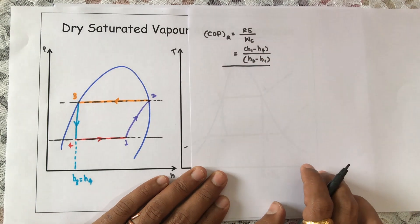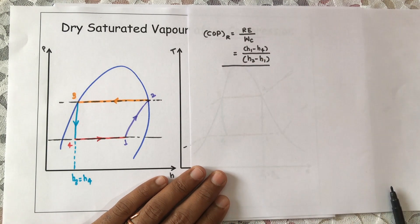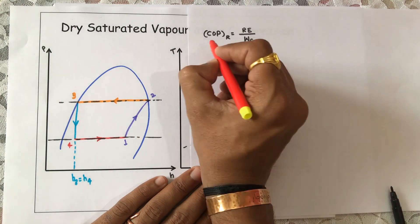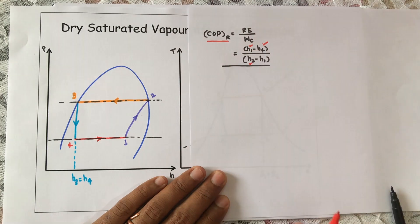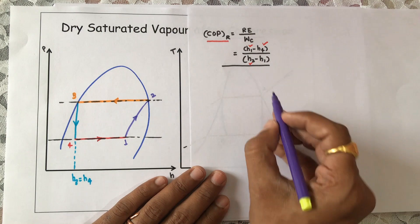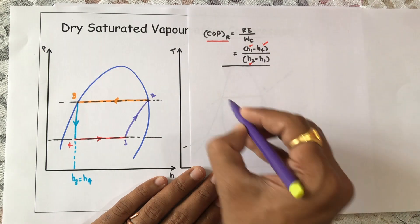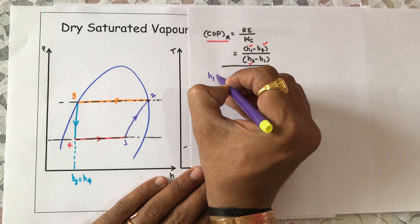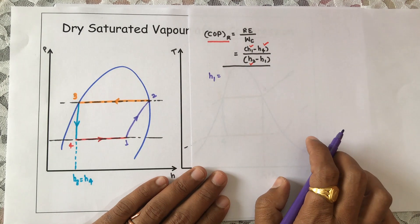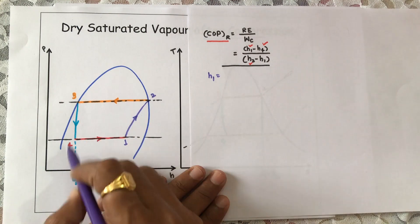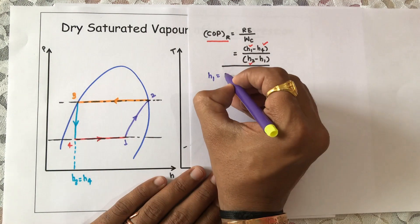If we get the values of h1, h2, and h4, we can easily calculate the coefficient of performance. Let us follow how we can calculate the values of h1, h2, and h4. h1 is present inside the vapor dome.